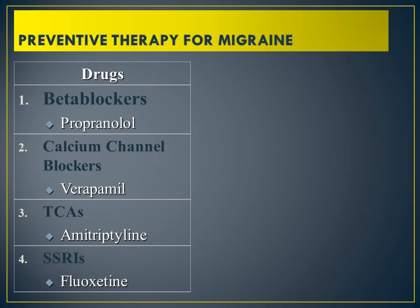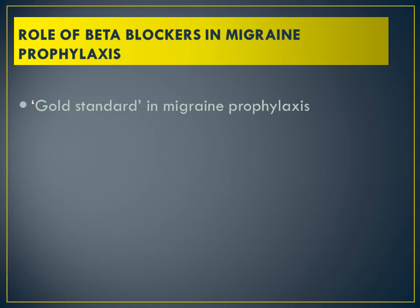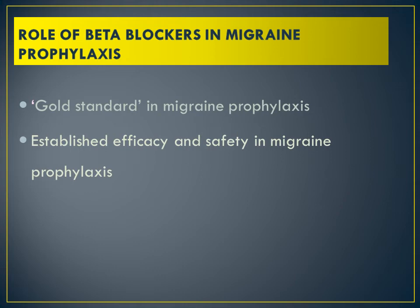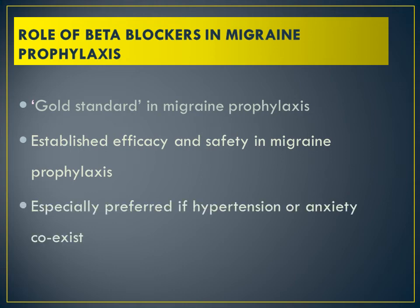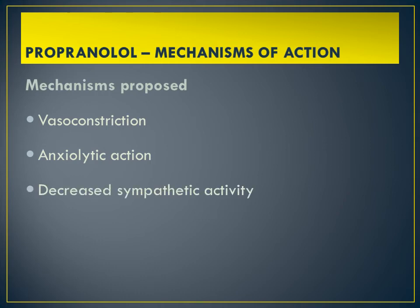Prophylactic or preventive therapy of migraine includes beta blockers like propranolol, calcium channel blockers like verapamil, tricyclic antidepressants like amitriptyline, and SSRIs like fluoxetine. Beta blockers are the gold standard due to established efficacy and safety in migraine. They are preferred if the patient also has hypertension or anxiety. Propranolol, which is non-selective, works via vasoconstriction, anxiolytic action, and decreased sympathetic activity.